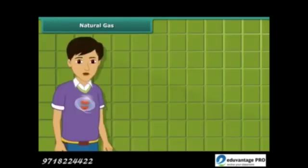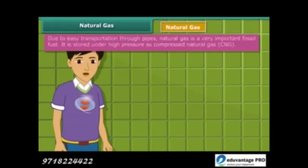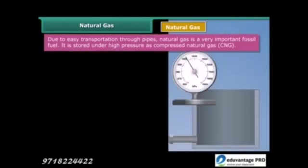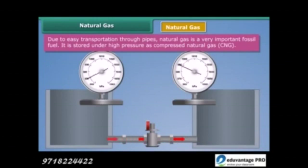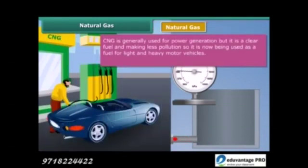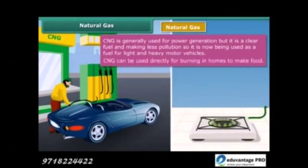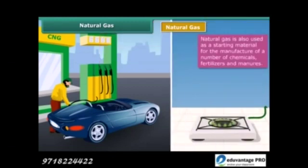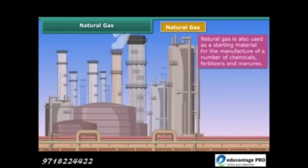Now let's move on to our next exhaustible natural resource — natural gas, also known as compressed natural gas or CNG. It is stored under high pressure as CNG. CNG is generally used for power generation, but due to being less polluting, it is also being used as a fuel for vehicles and for cooking purposes. Natural gas is also used as a base material for the manufacture of a number of chemicals and fertilizers.